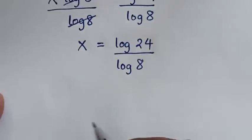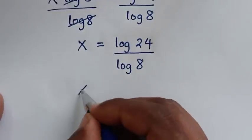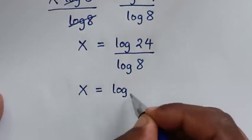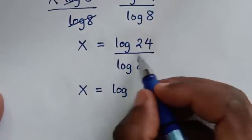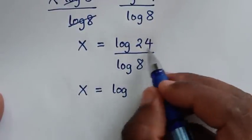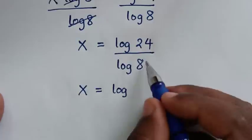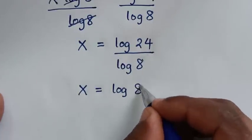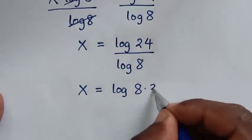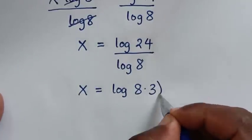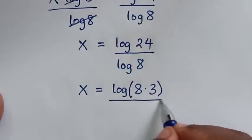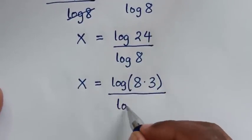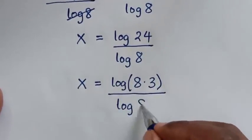In the next step, x is equal to log of 24 over log of 8. Now 24 is divisible by 8 — 24 is the same as 8 times 3 — so we write log of 8 times 3 over log of 8.